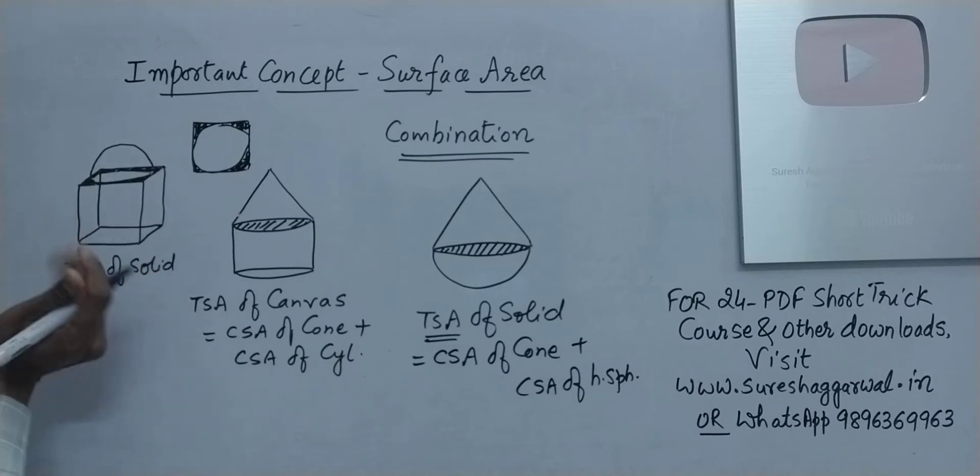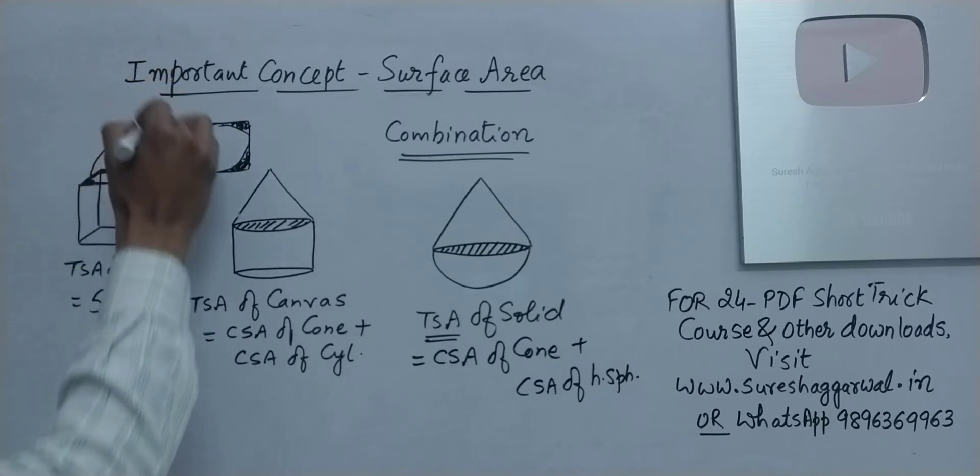So the four walls and the base, it remains the same. If the side is a, then five a square is the area of four walls and the base. They are intact because nothing has covered it, right?